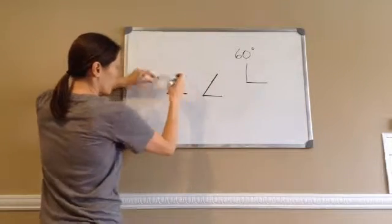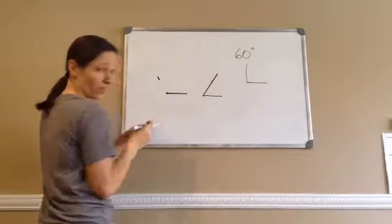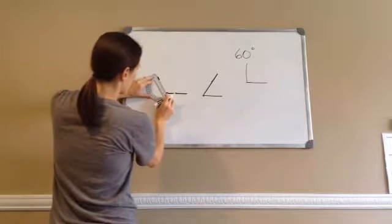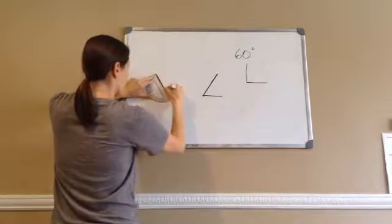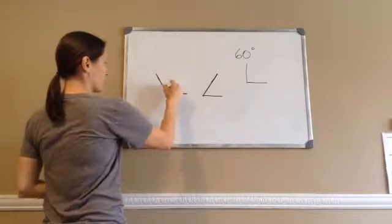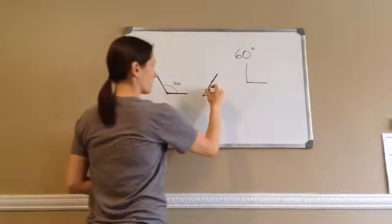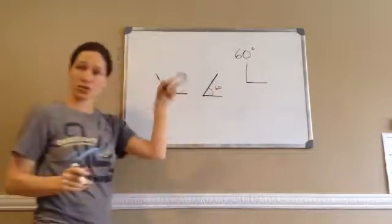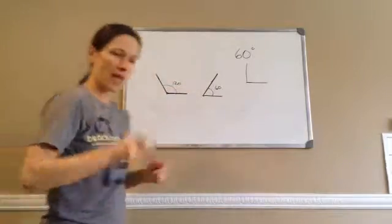And I know it's going to be a fat angle because 120 is greater than 90. So there is 120. This length is 120, this length is 60. That's how you draw an angle.